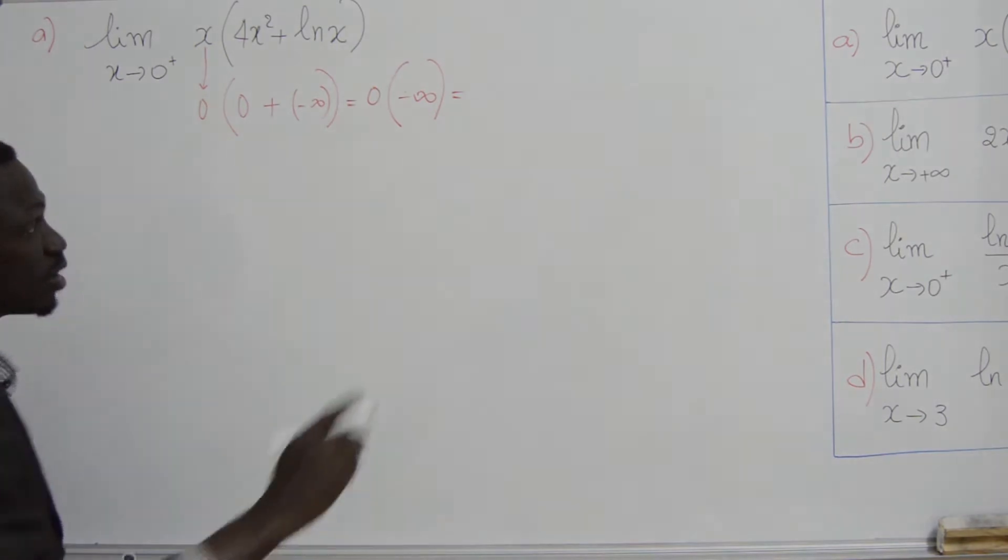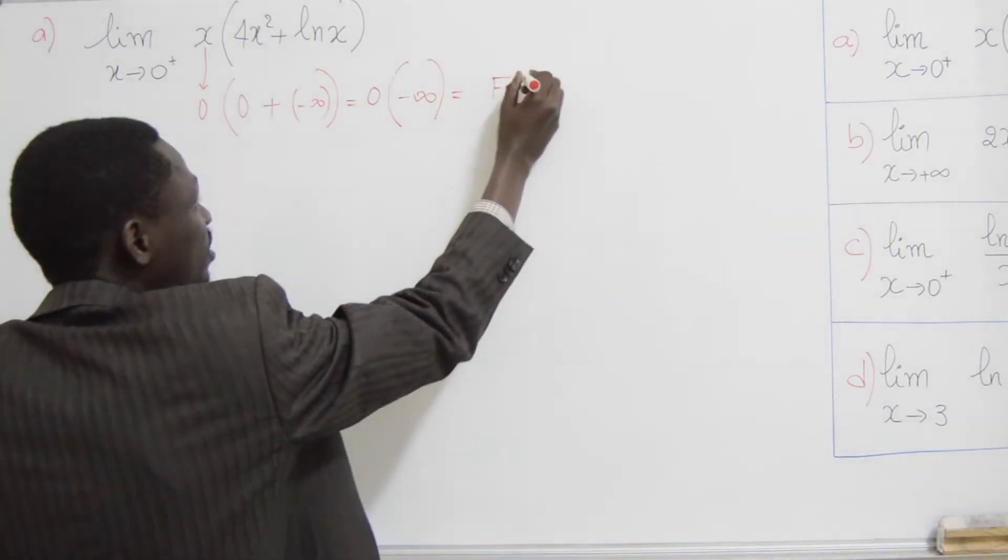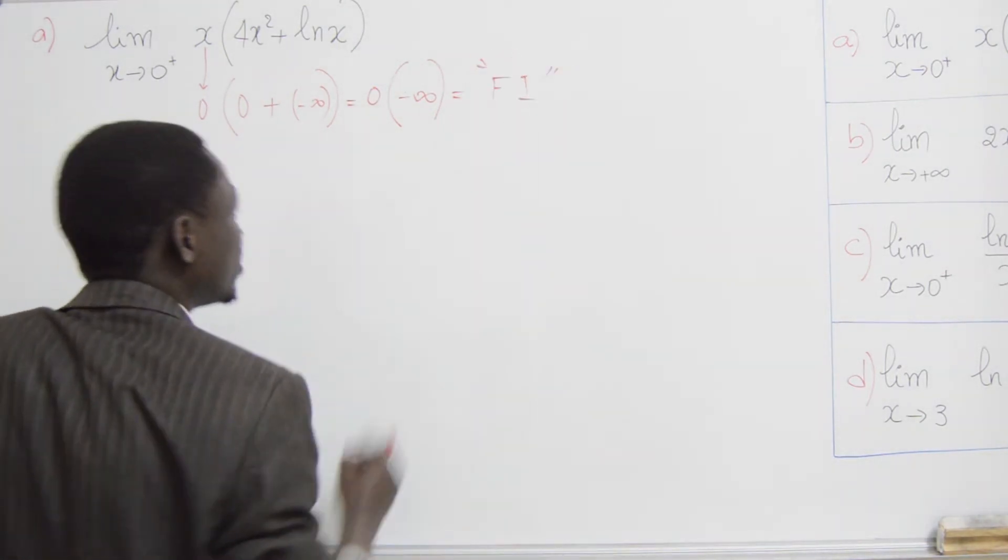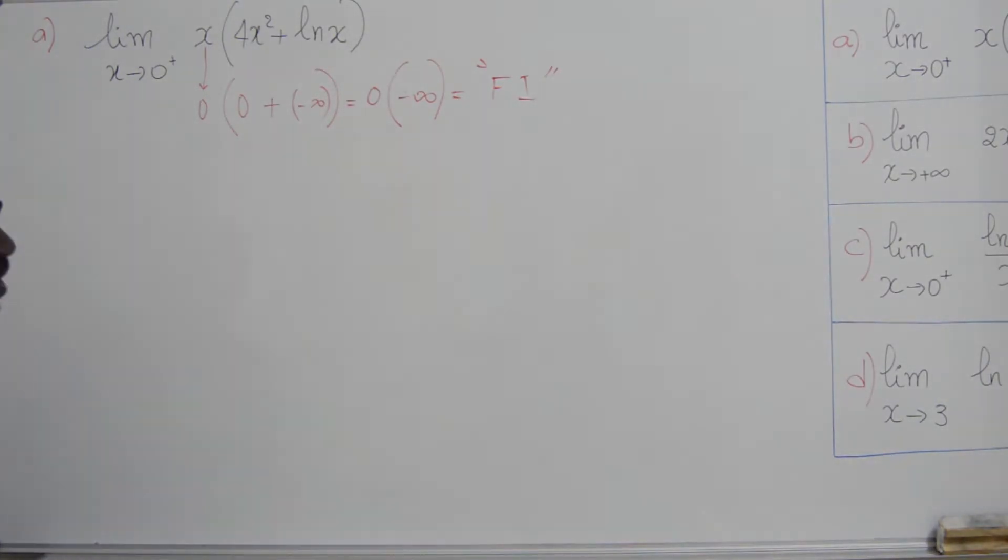Alors, 0 fois moins ln2, c'est une forme indéterminée. Nous allons essayer de lever cet indéterminé.